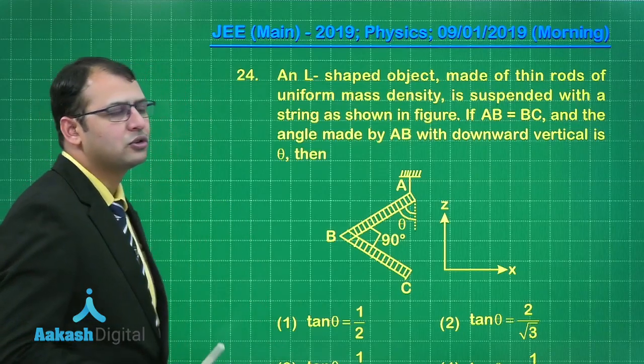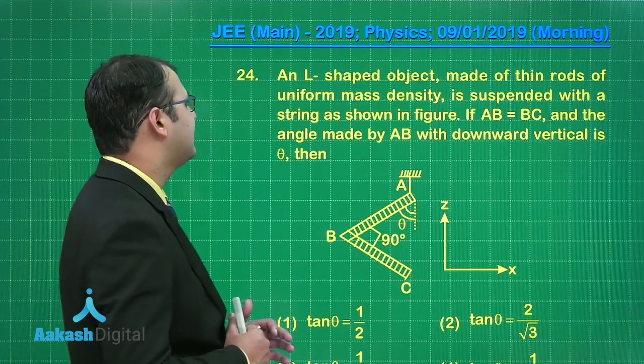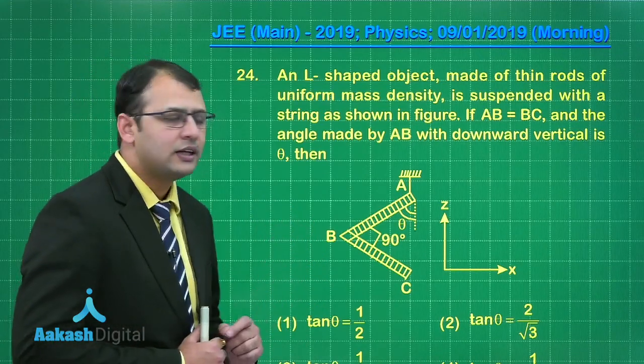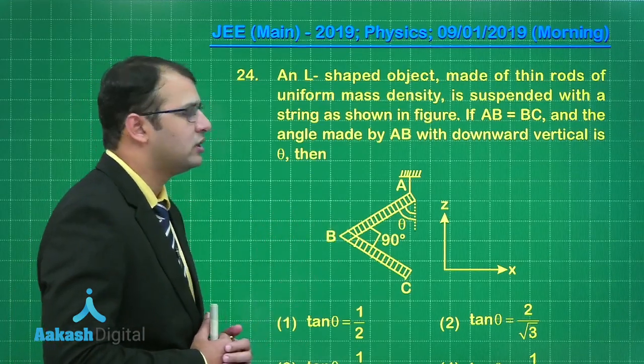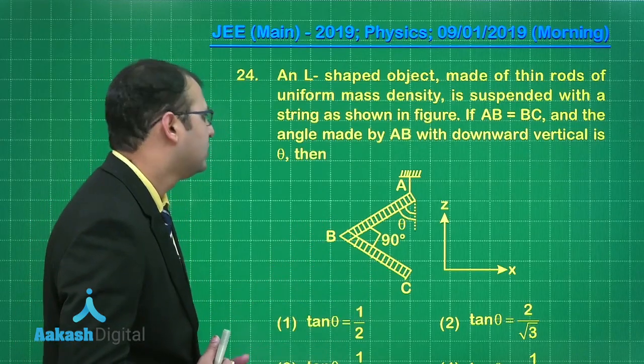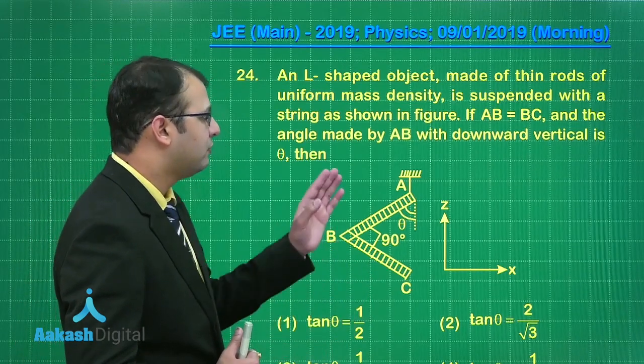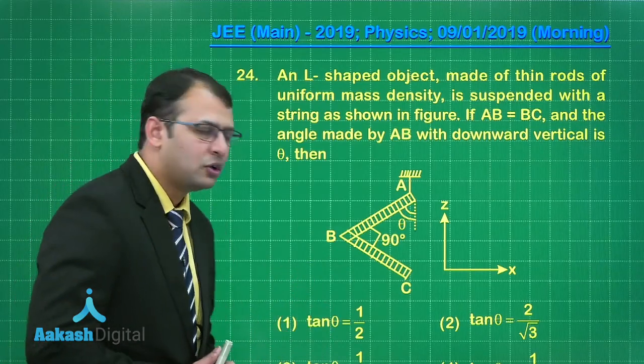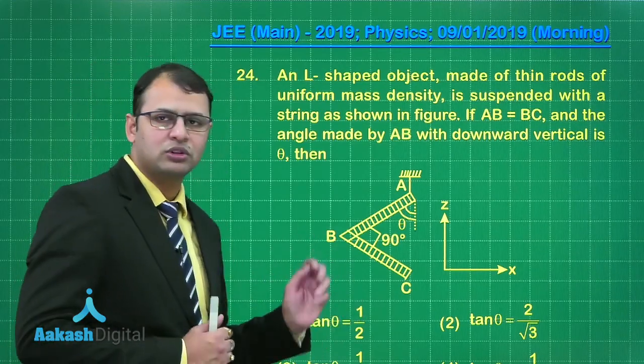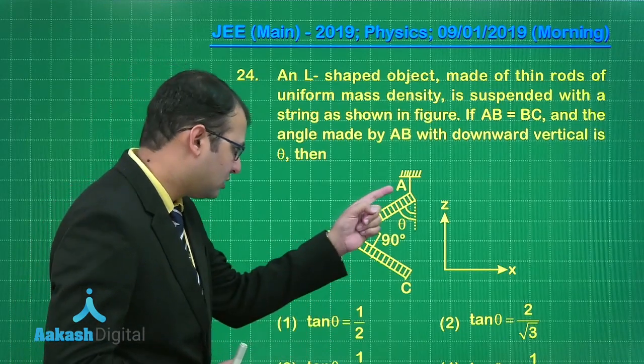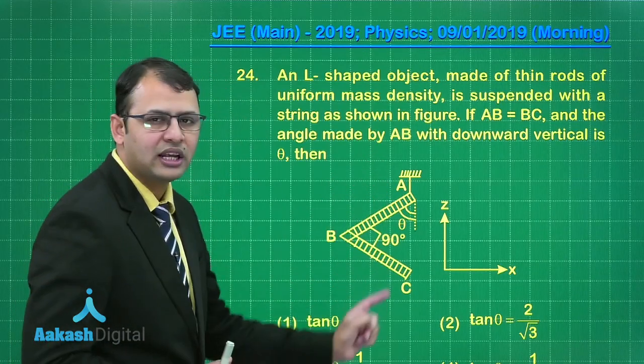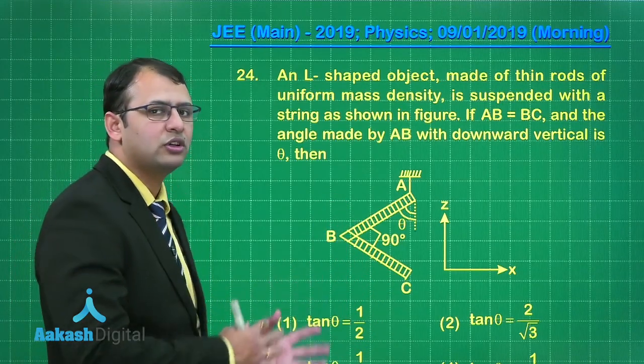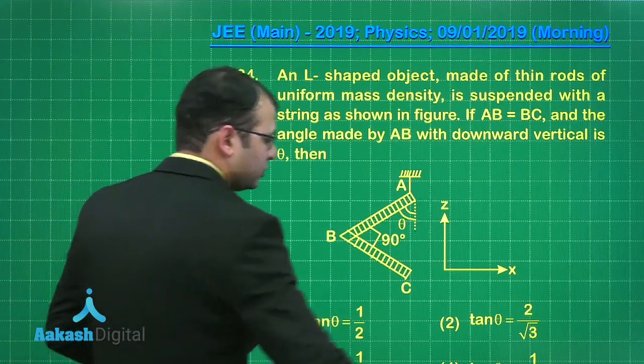This question belongs to mechanics section. The question says an L-shaped object made of thin rods of uniform mass density is suspended with a string as shown in the figure where AB equals BC. The angle made by AB with downward vertical is θ. We have to find the value of θ. In order to understand this, the most important thing is that the hanging portion will lie straightly or connect it to center of mass of the system. So most important is to find the center of mass first.